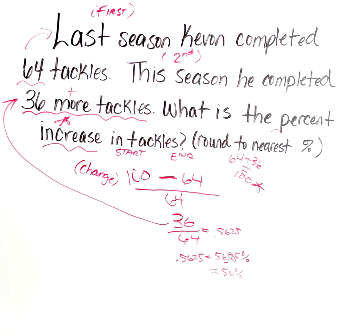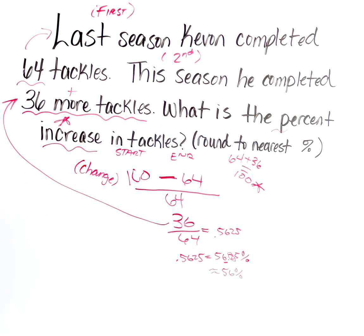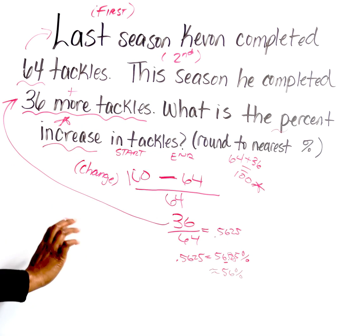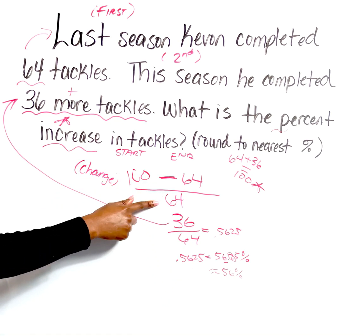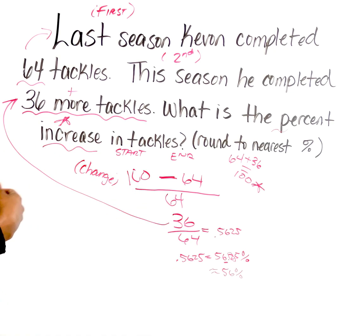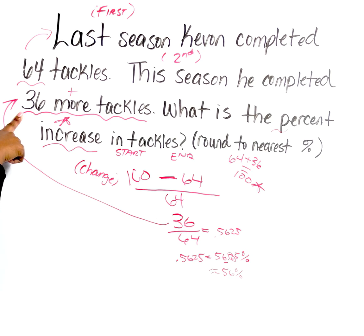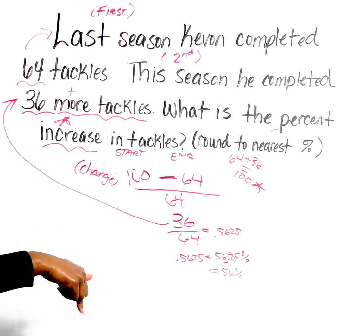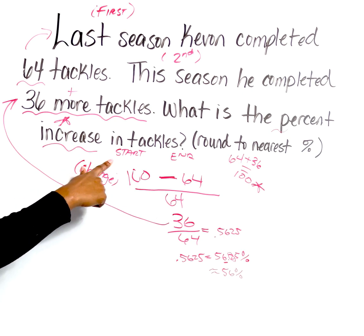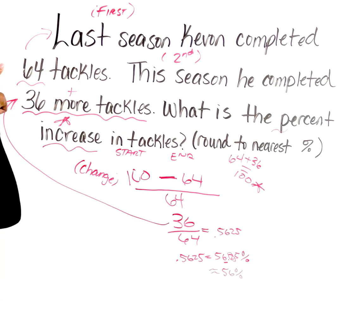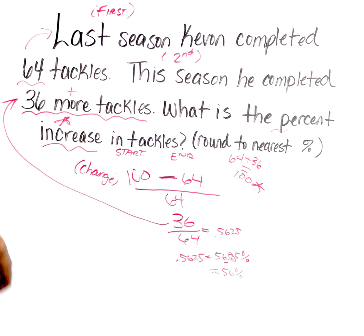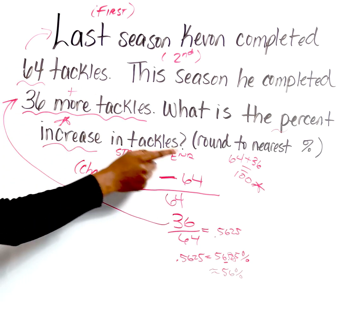Let's take a look at this question again from the top. Last season Kevon completed 64 tackles; this season he completed 36 more tackles. What is the percent increase in tackles, rounded to the nearest percent? The trigger is percent increase — that tells me to subtract two values and divide by the original. My first value is 64 tackles from last season (the start). The 36 is how many more he got this season, so I don't know the end yet — I need to add 36 to 64, which gives us 100.